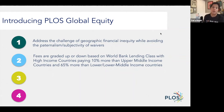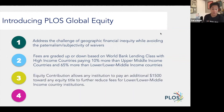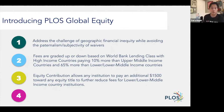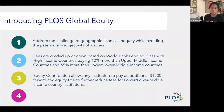Additionally, we invite institutions that want to participate, regardless of World Bank Lending Classification, to support their colleagues in lower- and lower-middle-income countries through an optional equity contribution. This allows institutions to increase their annual commitment to this model in the hopes of lowering fees for lower- and lower-middle-income countries in subsequent years.